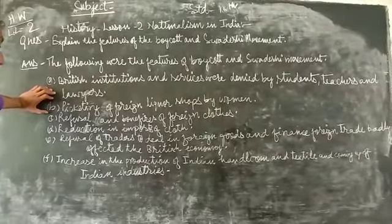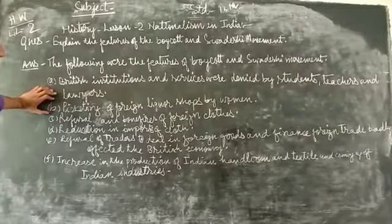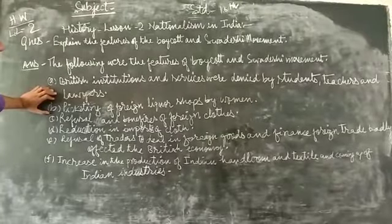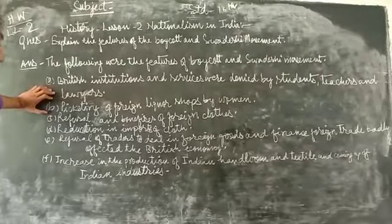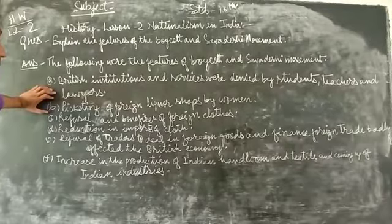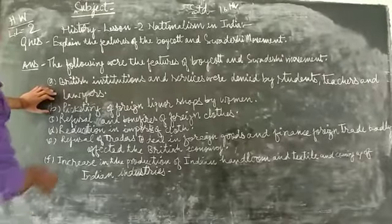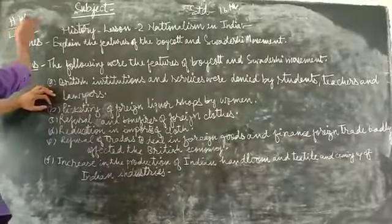Indian handlooms and textile production increased. The Indian industry grew as people supported indigenous products. This concludes lesson 2 of history.